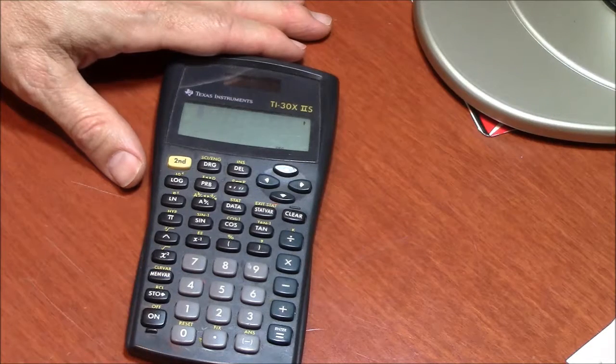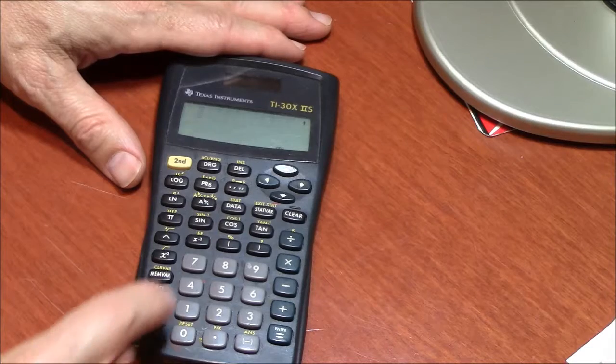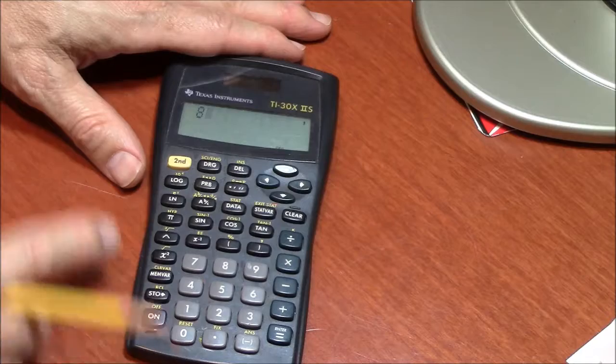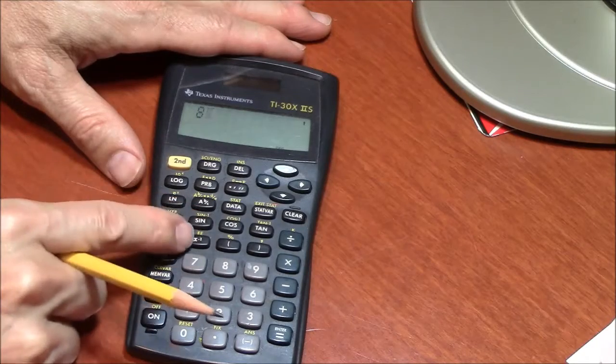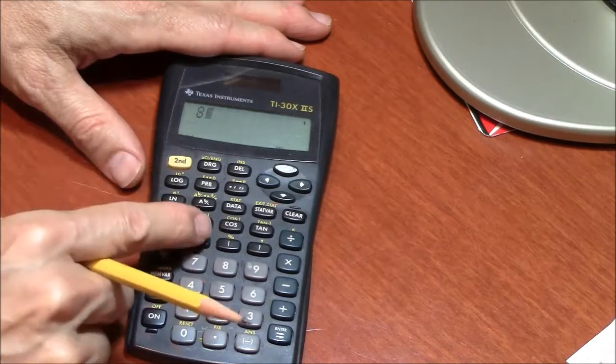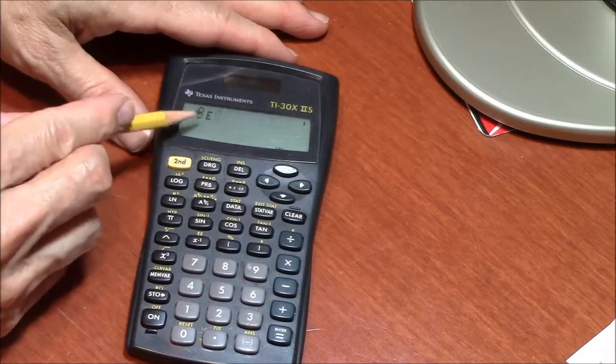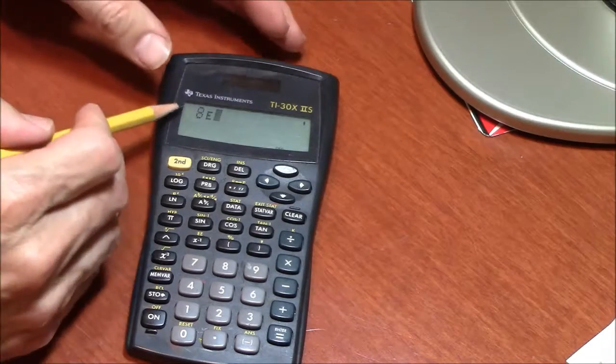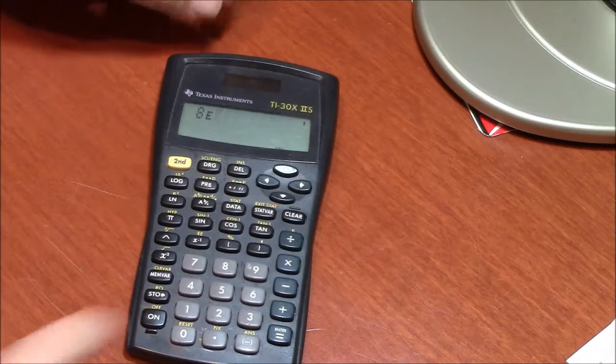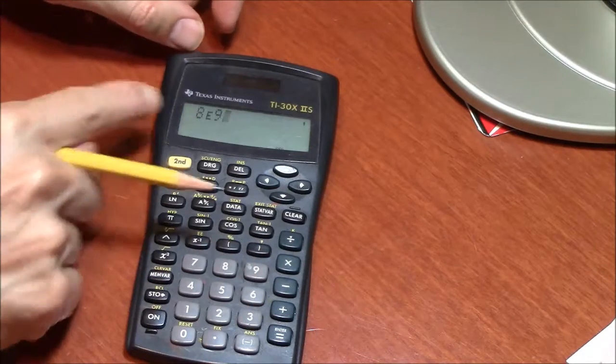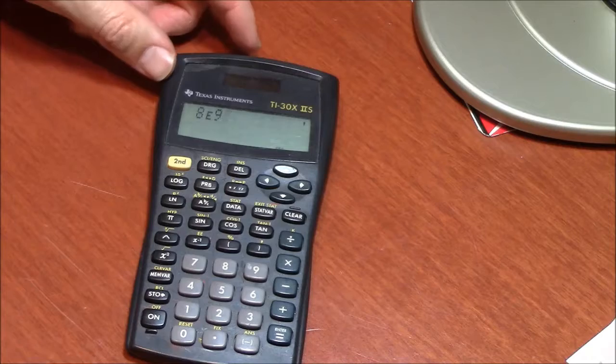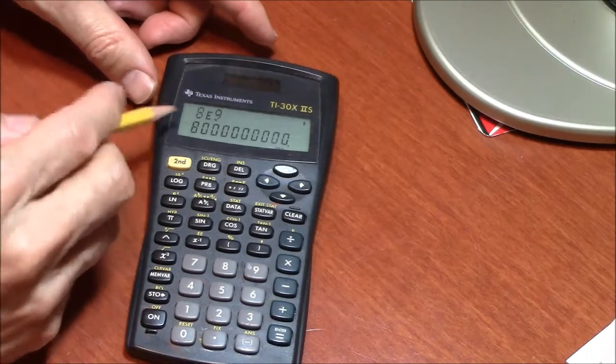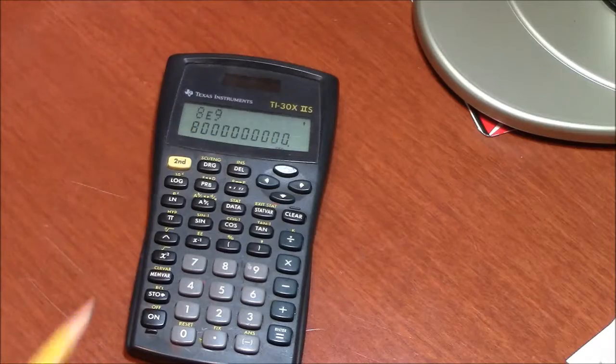If I'm doing 8 times 10 to the ninth, I'll press the number 8. I will not press times. I will simply use the EE function. You'll notice an EE appears on the screen. It's asking me what is the exponent on the 10. It's 8 times 10 to the ninth. That, on the calculator, is 8 times 10 to the ninth. If I hit enter, it may show me 8 times 10 to the ninth with all the zeros.